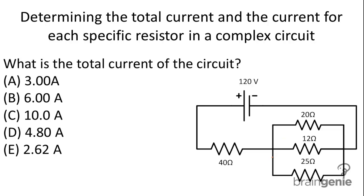To figure out the total current of the circuit, we're first going to need to determine the equivalent resistance of this section of the circuit. Then from there, we're going to use Ohm's Law, V equals IR, to determine the total current.